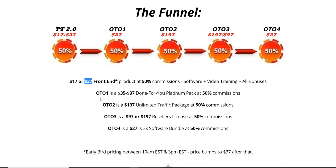OTO number one is a done-for-you platinum pack. You'll get done-for-you campaigns in different niches. This is great for complete newbies who don't have a website or are looking to create a WordPress website — grab this done-for-you platinum package, fire up the software, and you're good to go to get free traffic.